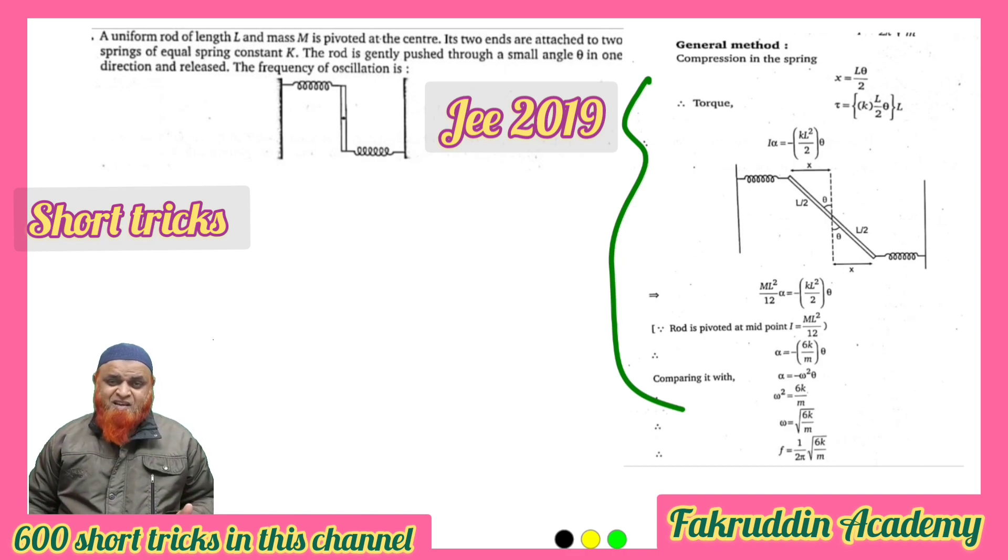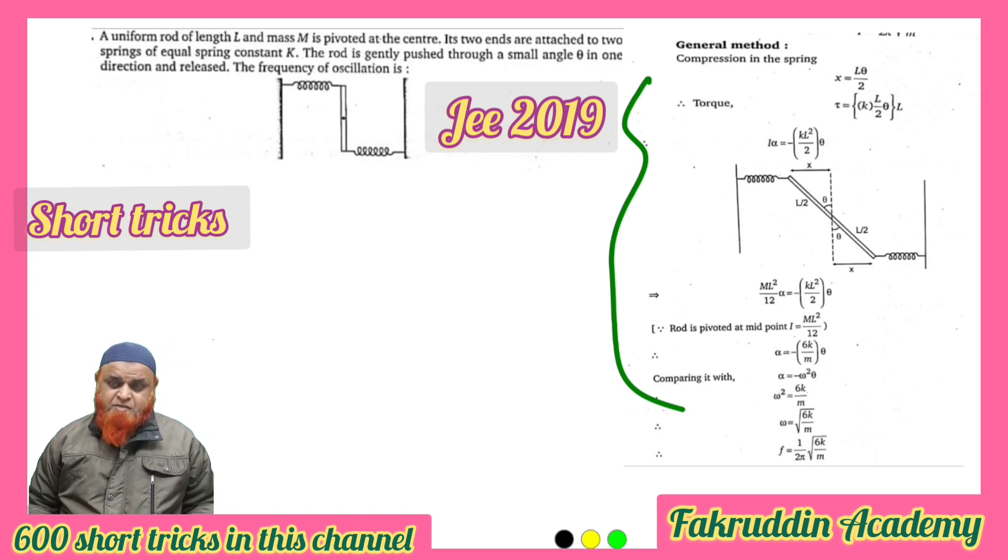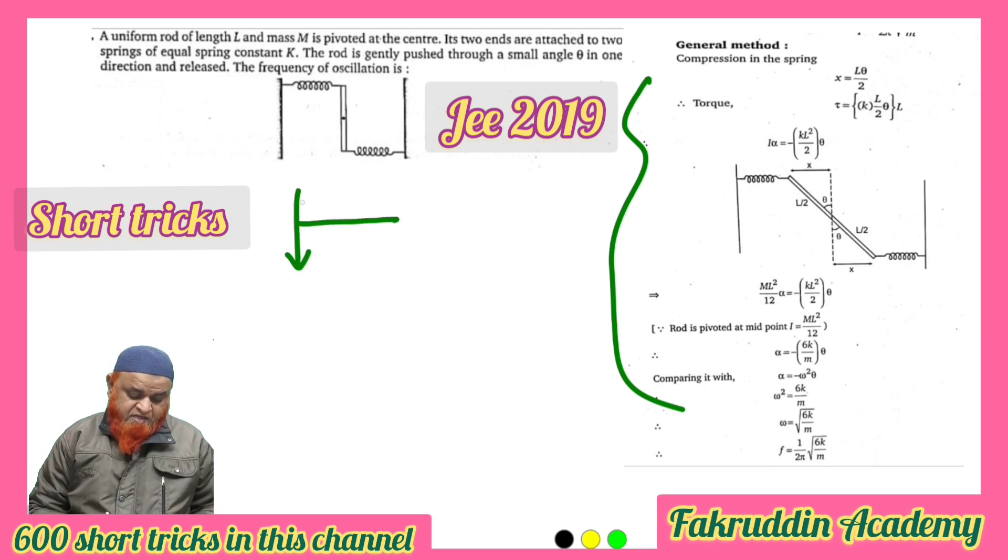You all know that this is a rod. If you are going to consider a rod along with this axis with the edge of the rod, the moment of inertia is going to be how much? It is going to be ml² by 3.